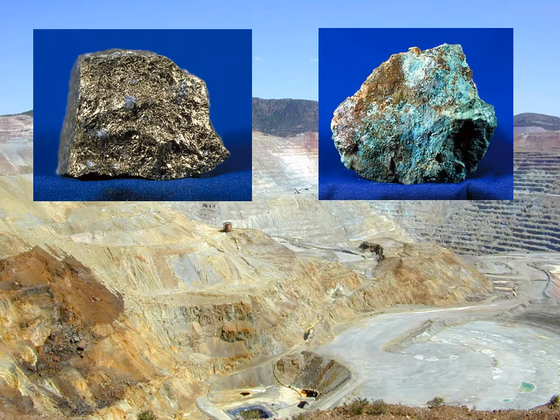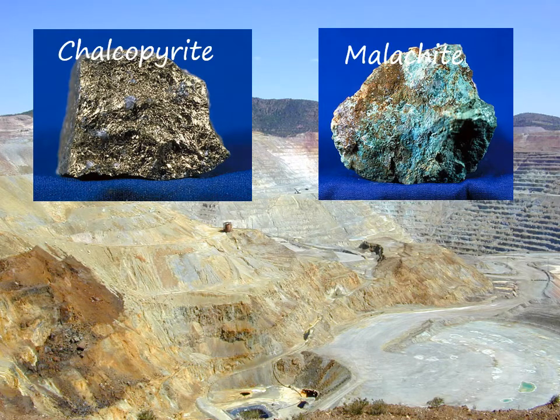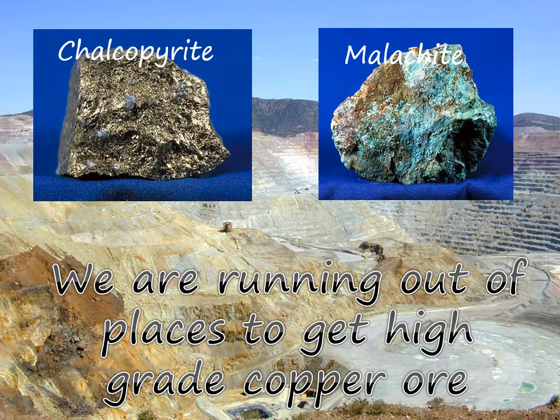Now these are high grade copper ore. So we have chalcopyrite and malachite. Chalcopyrite is copper iron sulfide and malachite is a copper carbonate hydroxide. We're running out of places to get high grade copper ores. These are finite resources. We're finding them in the earth's crust and eventually they will run out completely.